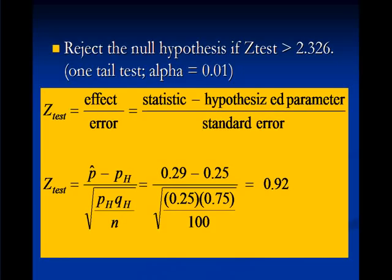In this case, the statistic is p hat, the sample proportion, minus pH, which is the hypothesized proportion, divided by standard error. Make sure you use the hypothesized proportion in this one. So we've got 0.29 minus 0.25 divided by standard error. We come out with 0.92, which is not greater than 2.326, so we're going to fail to reject H0.